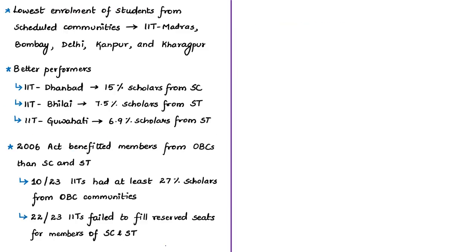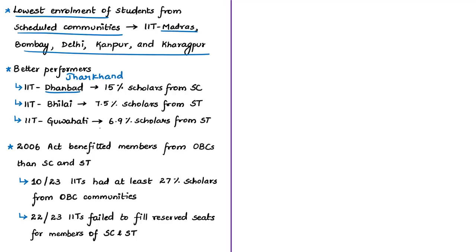Almost around two-thirds of admissions for PhD programs went to students belonging to categories other than SC, ST, and OBC. Around 60% of all PhD admissions are concentrated in just five IITs — Madras, Bombay, Delhi, Kanpur, and Kharagpur — and all five institutes recorded some of the lowest enrollments from Scheduled Castes and Scheduled Tribes. Only IIT Dhanbad (formerly Indian School of Mines in Jharkhand) had around 15% of scholars from SC communities, and only IIT Bilai in Chhattisgarh and IIT Guwahati had approximately 7.5% and 7% of seats taken by ST persons respectively.